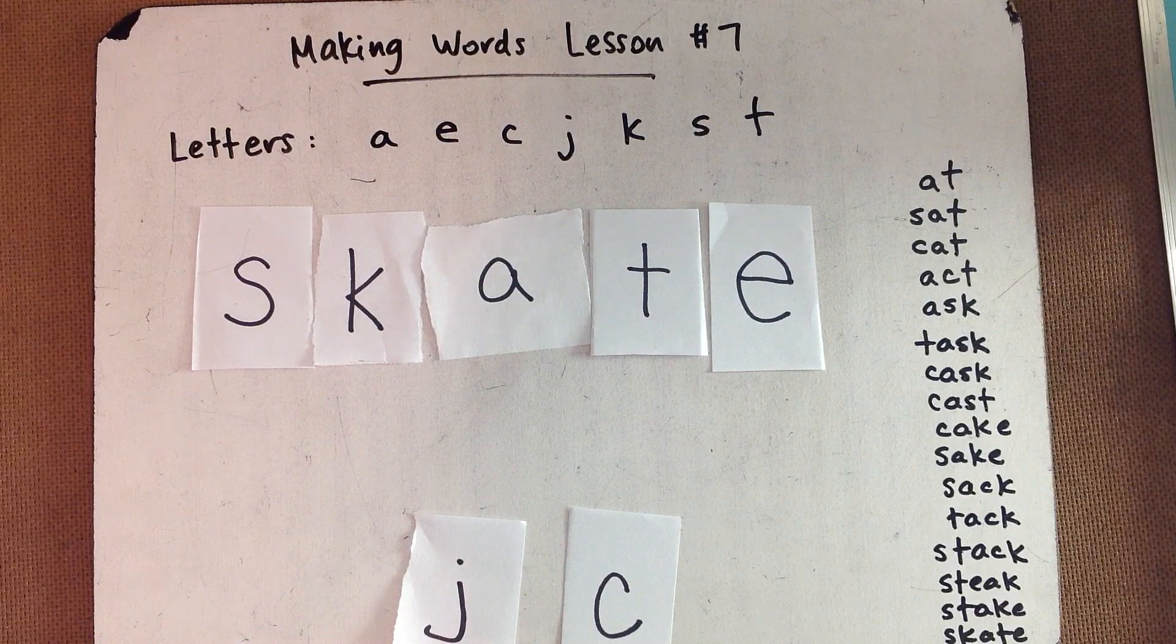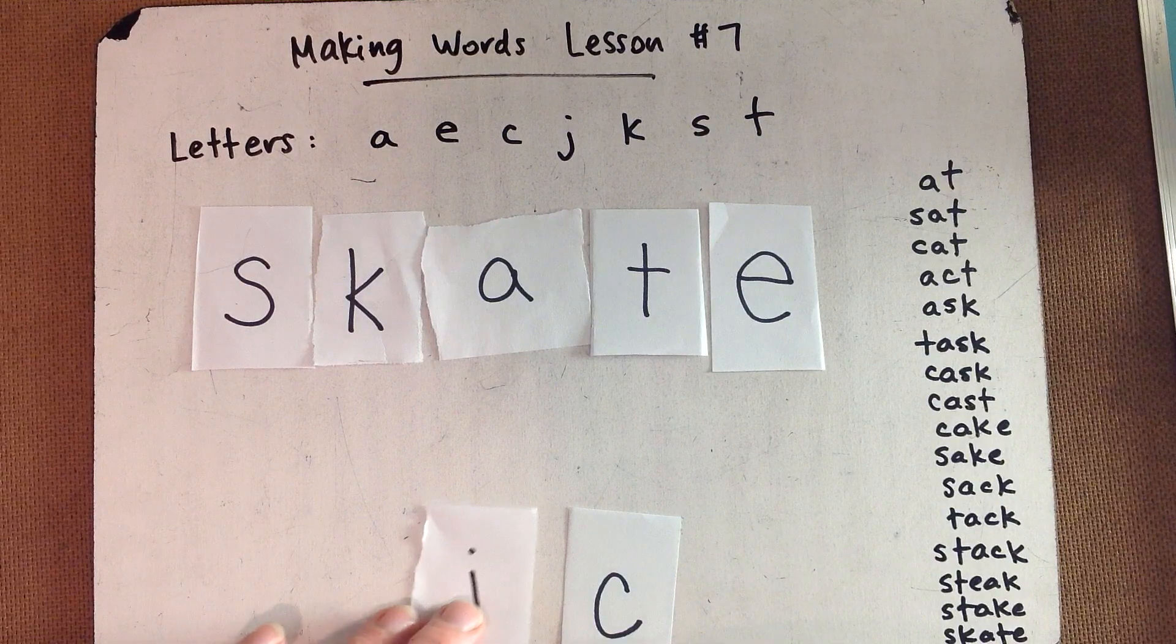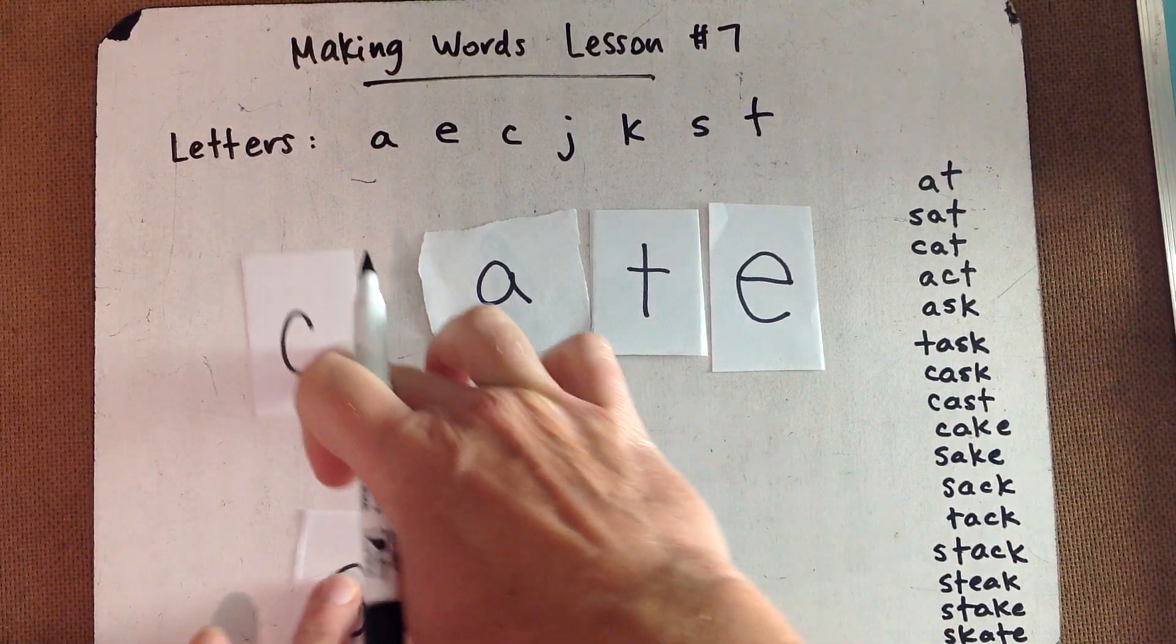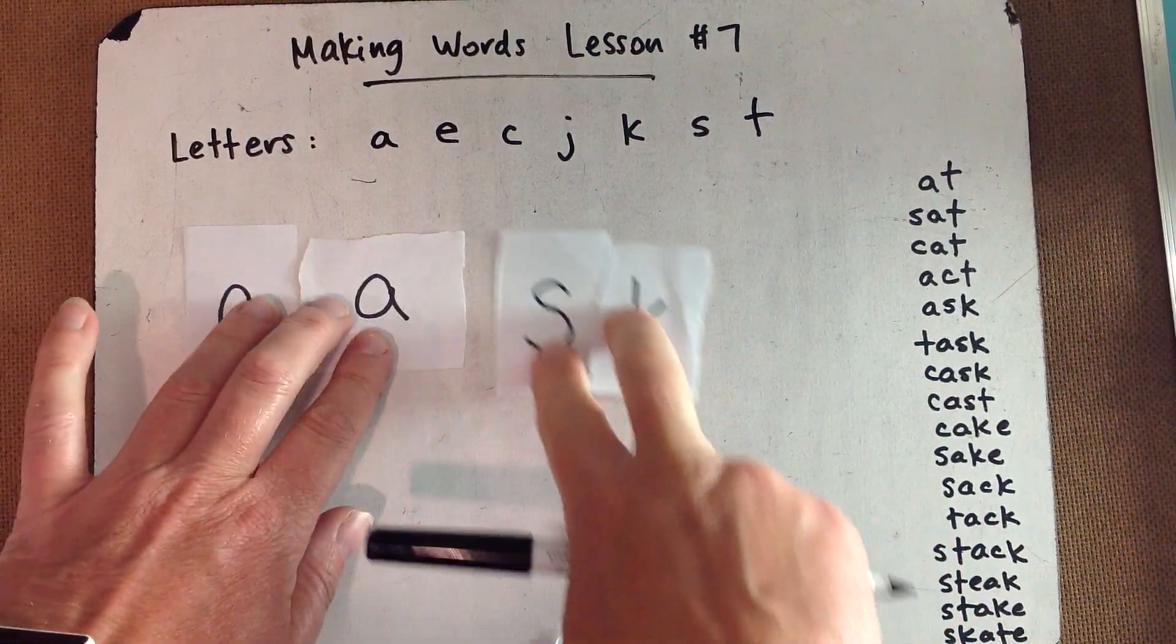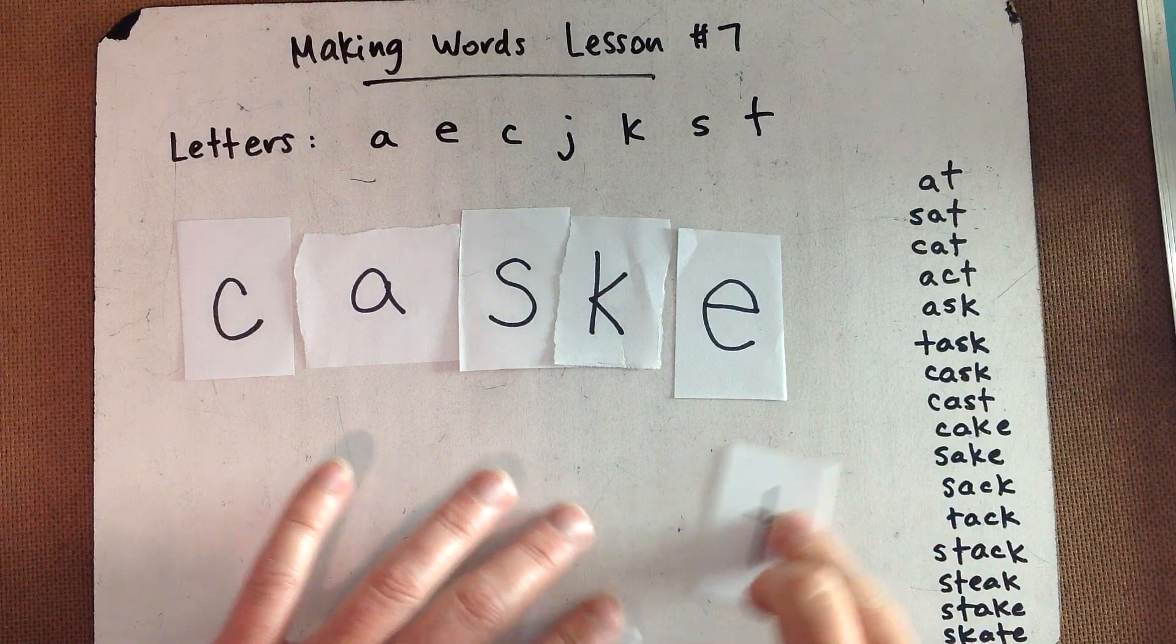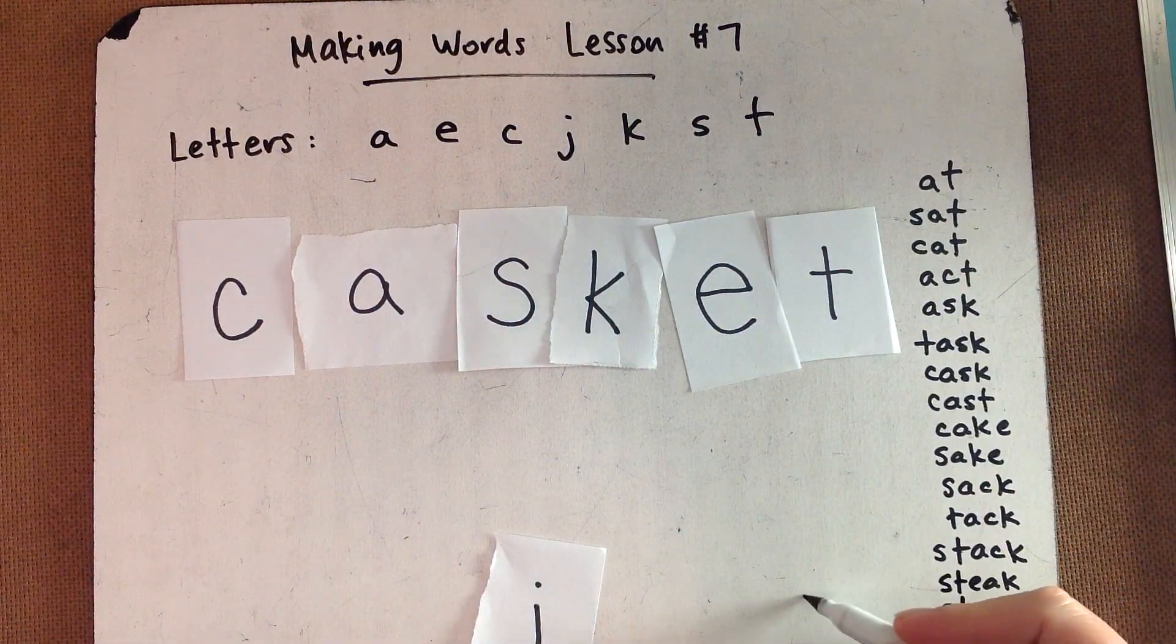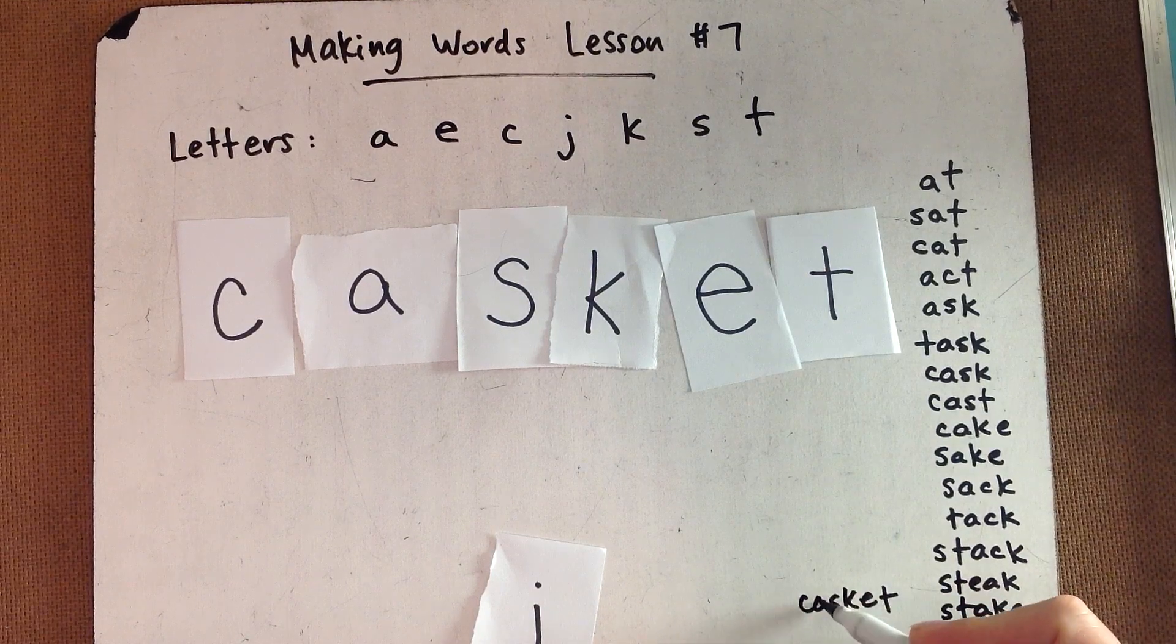Okay, the next one is a two-syllable word, six letters. Casket. Casket. People are often buried in a casket. A wooden box. So we get C-A-S-K. There's that word ask again. Casket. And it's actually spelled there. C-A-S-K-E-T. Casket.